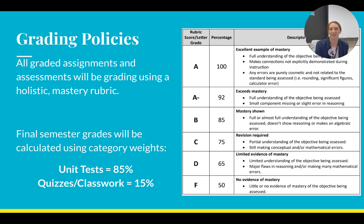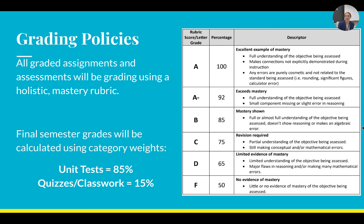In our course, all graded assignments are going to be assessed using a holistic mastery rubric, and you can see that here. Students will get a letter grade that is then entered in PowerSchool using the percentages that you see here. Using this type of rubric instead of a traditional points or percentage-based system gives our students some more leeway in terms of their learning. What I mean by that is some small errors in content or understanding are not going to be super detrimental to students overall.